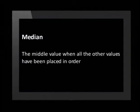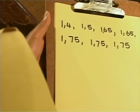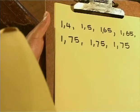The median is the number in the middle of your set of data — specifically, the middle value when all values are placed in order. To find the median of our netball team's heights, we need to put all the heights in numerical order from shortest to tallest. So: 1.4, 1.5, then 1.65 two times, then 1.75 three times. It's important to write down every number, even if it occurs more than once.